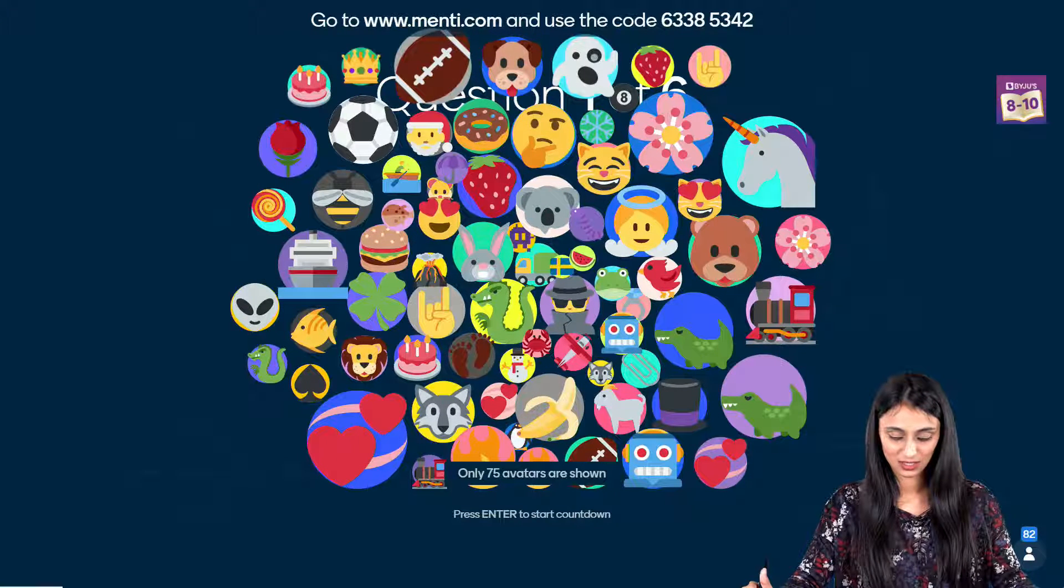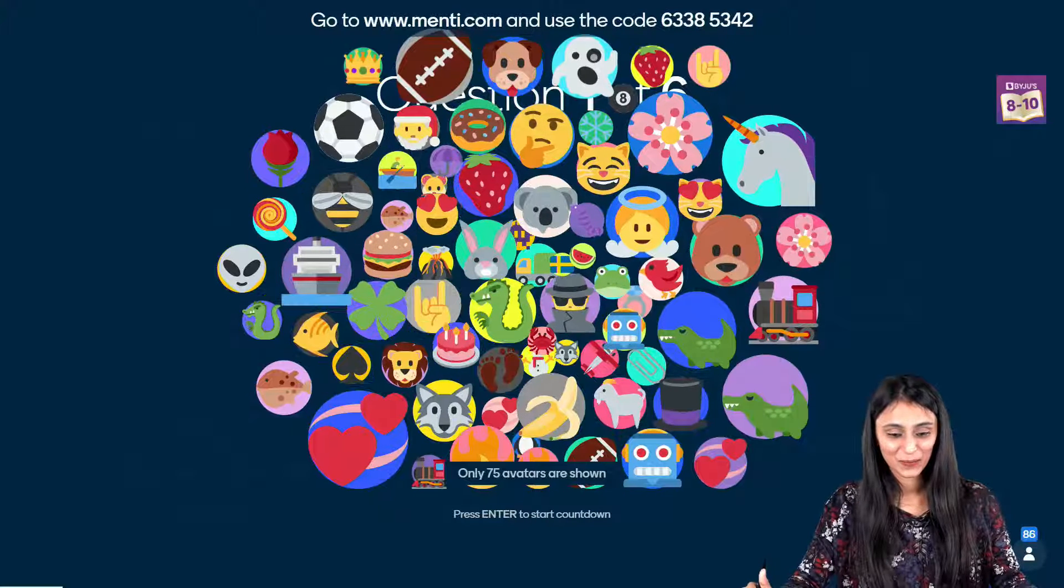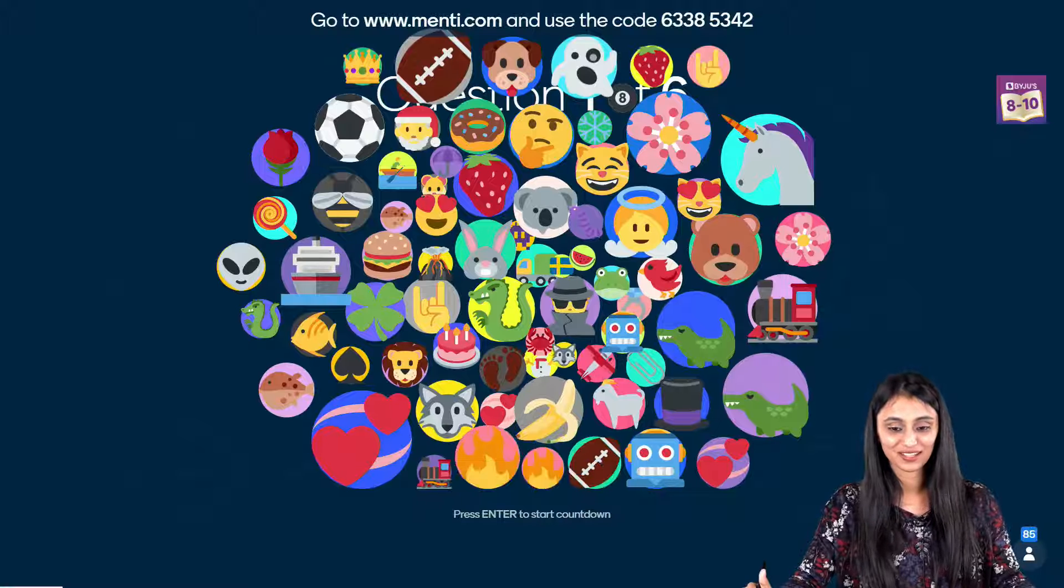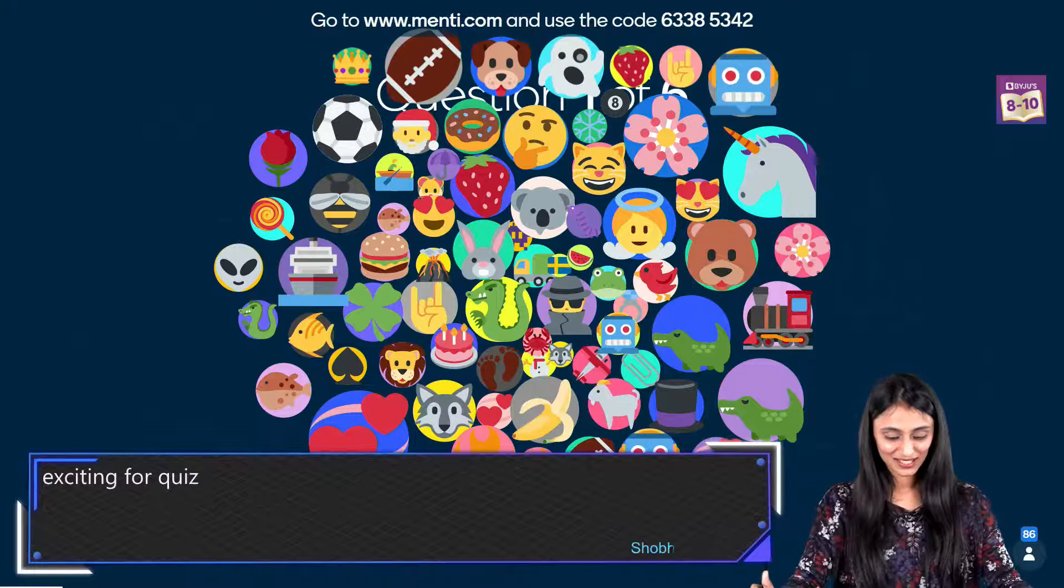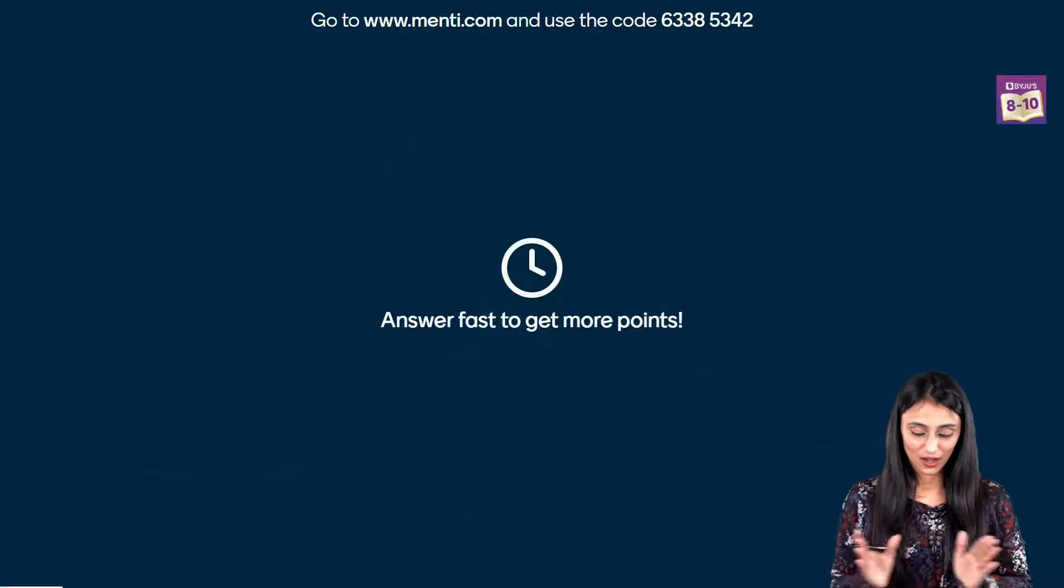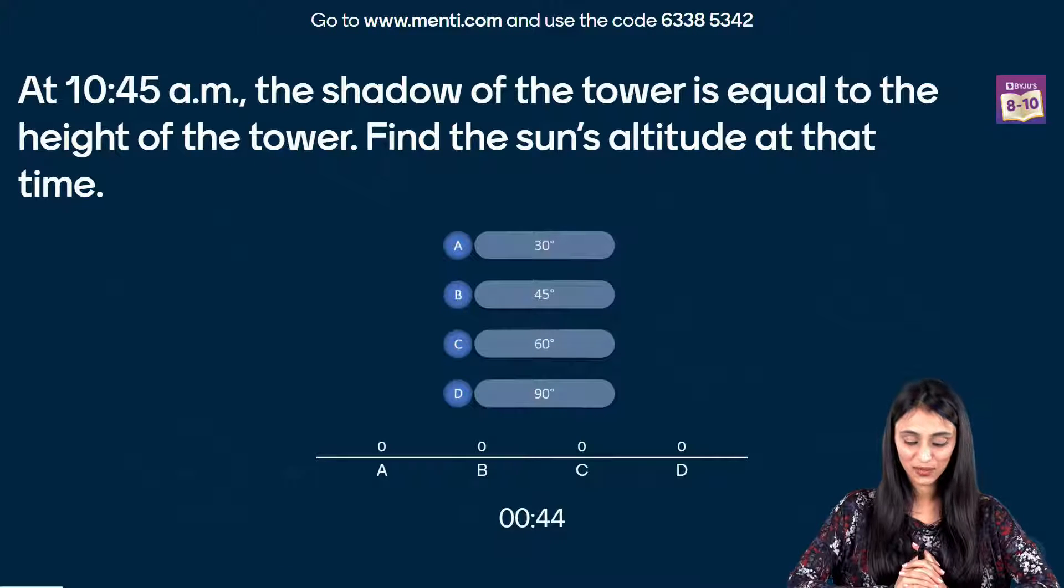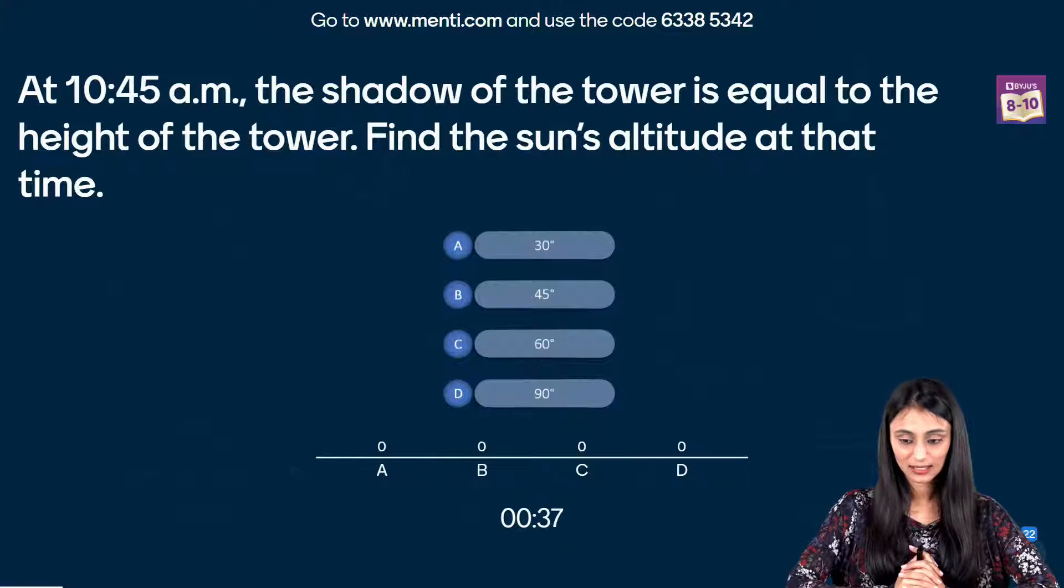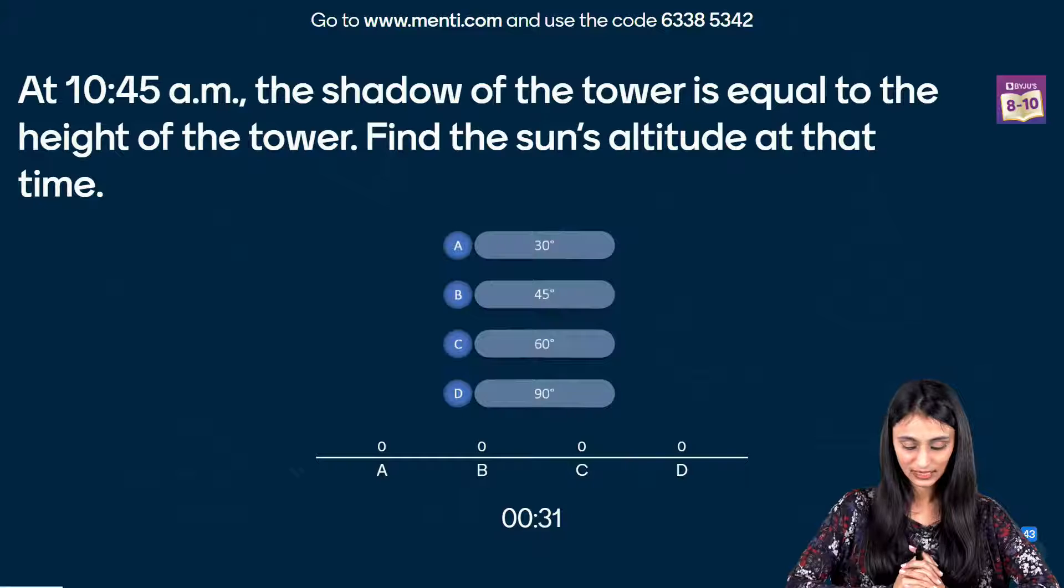Let's wait for few more seconds. Rishabh, ghost. Okay, Charvi, paper clip. Oh, I can see that. Yes. Abhishek Kumar, yours is ring, frog. Alright, alright. So, I can see a lot of people have joined. So let's start the quiz. Alright. So here is our first question, at 10.45 am, the shadow of the tower is equal to the height of the tower, find the sun's altitude at that time. You have four options, right? Timer has started.